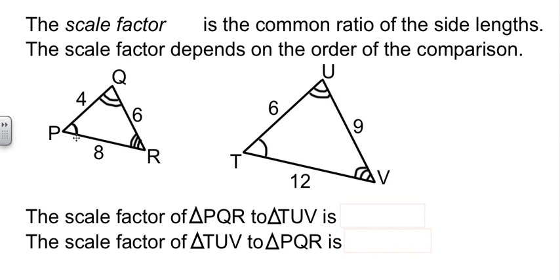We have two triangles. If they ask me for the scale factor for PQR to TUV. Okay. I need to take a pair that match up. So four matches six. PQ matches TU. Four matches six, which reduces to two-thirds. I could have done eight to 12. That would also be two-thirds. Or six here to nine here would also be two-thirds.